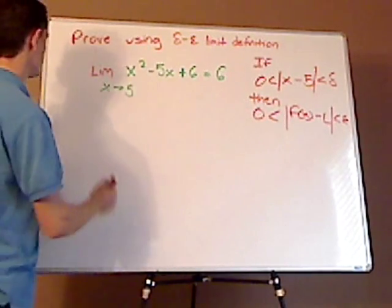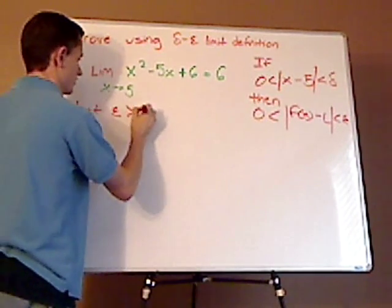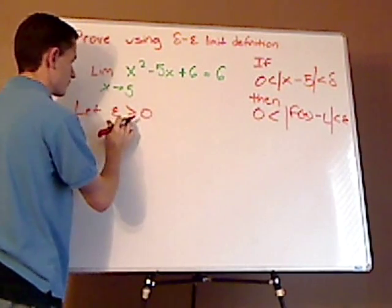So, let's assume first that epsilon is greater than 0, and it's a distance, so of course it's going to be positive.